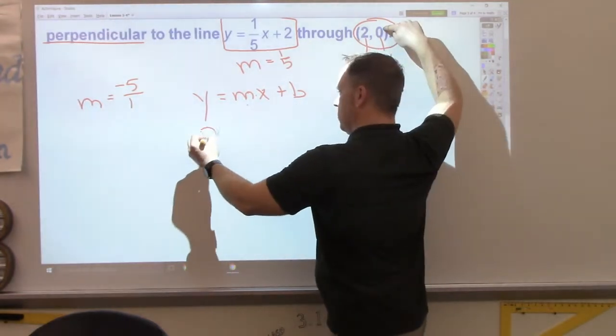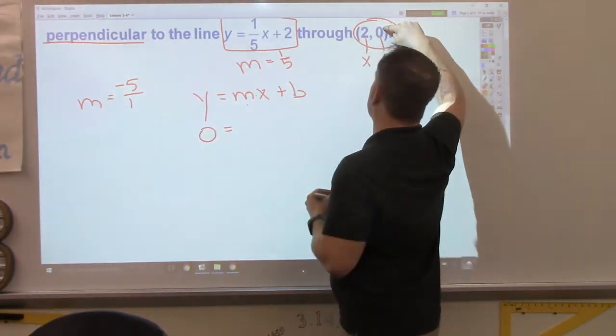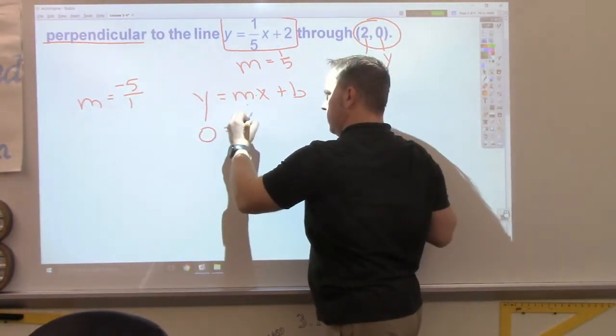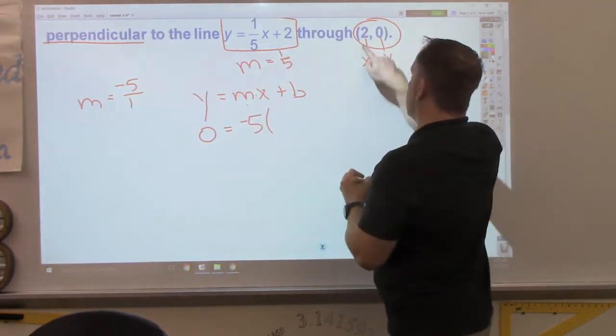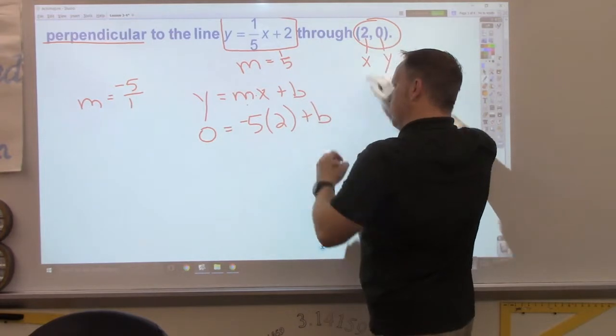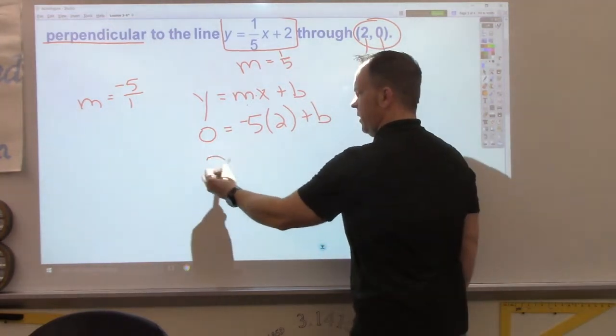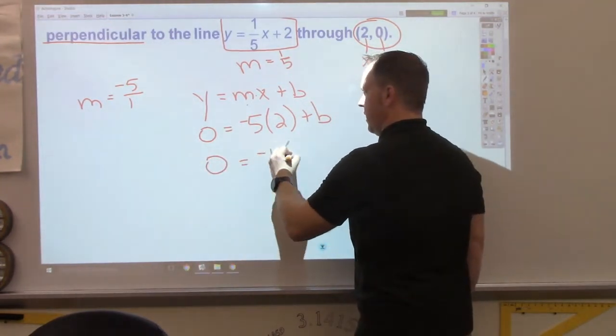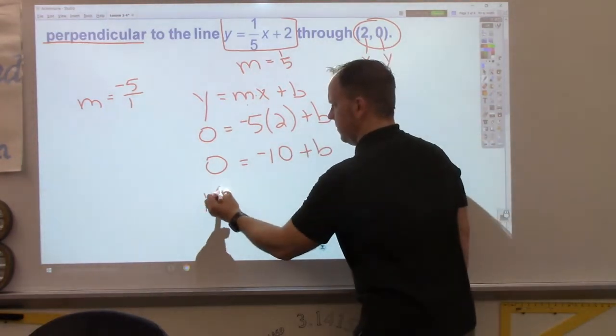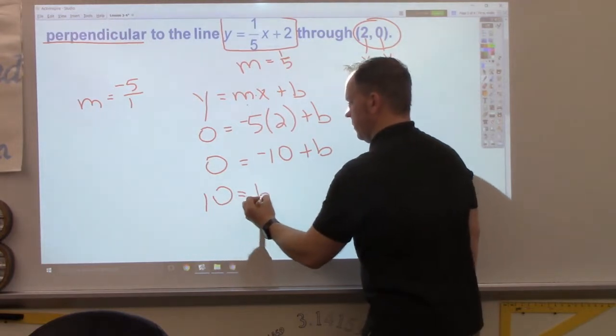So, I have 0 equals negative 5 times 2 plus b. So, my y-intercept, in this case, is 10.